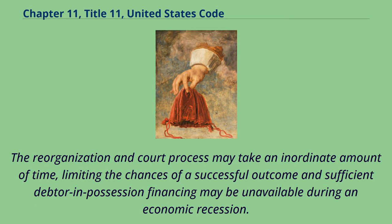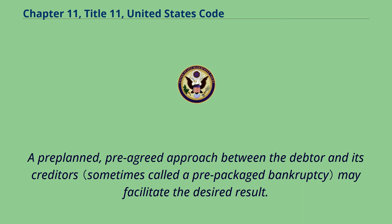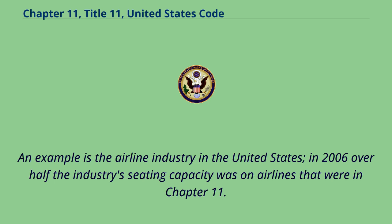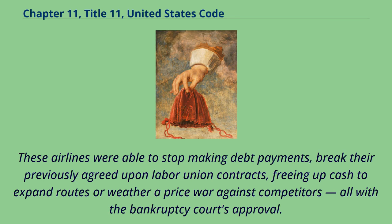The reorganization and court process may take an inordinate amount of time, limiting the chances of a successful outcome, and sufficient debtor in possession financing may be unavailable during an economic recession. A pre-planned, pre-agreed approach between the debtor and its creditors may facilitate the desired result. A company undergoing Chapter 11 reorganization is effectively operating under the protection of the court until it emerges. In 2006, over half the airline industry's seating capacity was on airlines in Chapter 11, which were able to stop making debt payments, break previously agreed-upon labor union contracts, and free up cash to expand routes or weather a price war, all with a bankruptcy court's approval.